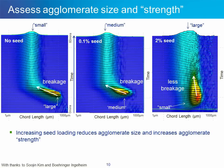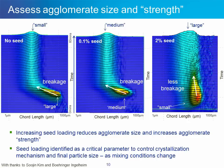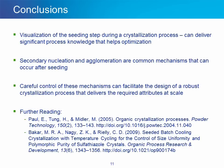What we conclude is that increasing the seed loading reduces the agglomerate size that's formed and potentially increases the agglomerate strength — perhaps the binding of these agglomerates is stronger, meaning that mixing inside the crystallizer is less able to break them apart. What we've really determined is that seed loading is a critical parameter to control the crystallization and potentially the final particle size, especially as mixing conditions change if the strength of those agglomerates is influenced by the seed loading chosen.